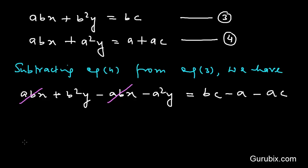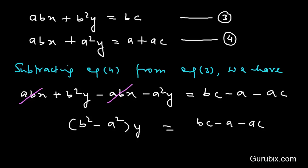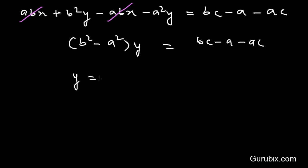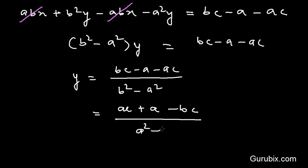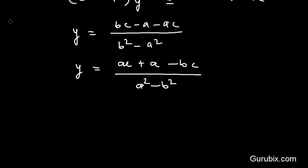We can cancel out the abx terms and take y common from the remaining terms. So we get y times (b-squared minus a-squared) equals bc minus a minus ac. This means y equals (bc minus a minus ac) over (b-squared minus a-squared), or equivalently, y equals (ac plus a minus bc) over (a-squared minus b-squared).